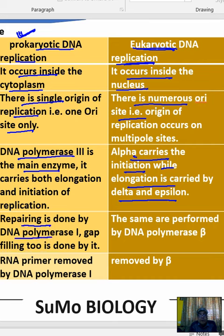In prokaryotes, repairing is done by DNA polymerase 1, and gap filling is also performed by it. In eukaryotes, if any incorrect substrate or wrong base gets incorporated, repairing is performed by DNA polymerase beta.